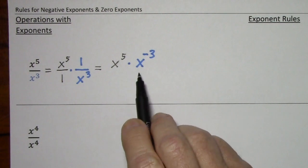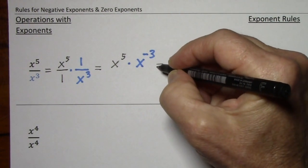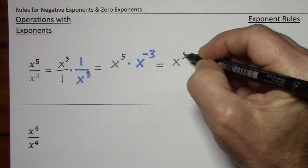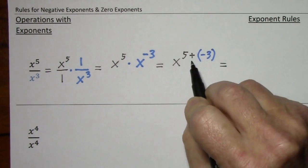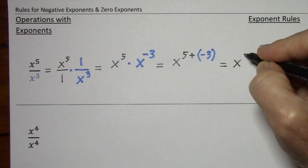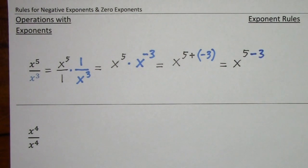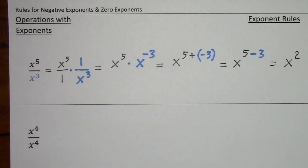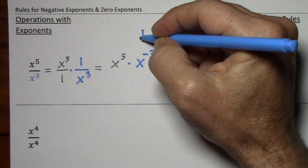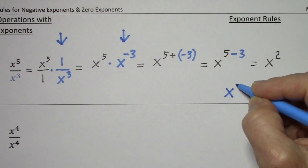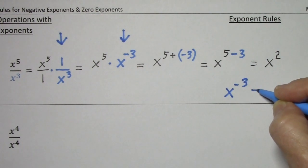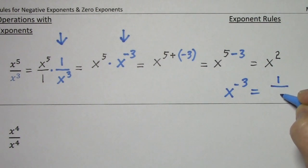Remember when you multiply like bases, you add exponents. And my preference is to write this with one sign. So the rule for negative exponents comes from this: x to the negative third is equivalent to one over x to the third. Notice the exponent is now positive.